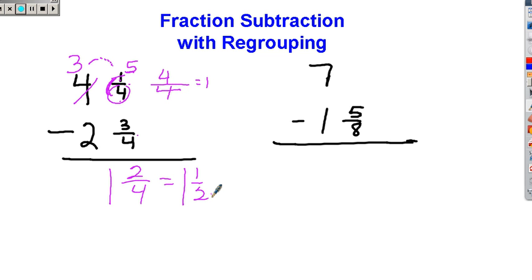Alright, what happens if we have 7 take away 1 and 5 eighths? A lot of kids are just going to put 5 eighths down here for this answer. That's incorrect. We have nothing right here. Nothing take away 5 eighths. Can't call that answer 5 eighths.